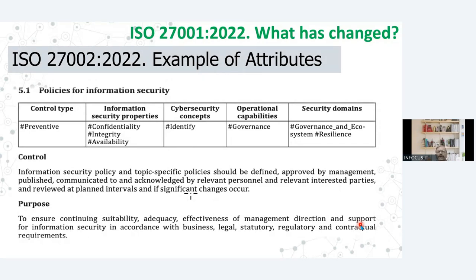In 27002:2022 the five attributes are: control type, information security property, cyber security concept, operational capabilities and security domain. Now whenever you are going to make a policy, you have to define what is the control type — whether it's a preventive control, detective control or corrective control. Then you also have to identify the information security properties, the cyber security concepts, the operational capabilities and the security domains. Whenever you create some policies, you have to define the attributes also.